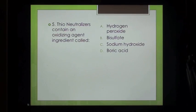Question 5: Thio relaxers contain an oxidizing agent ingredient called: A. Hydrogen Peroxide, B. Bisulfate, C. Sodium Hydroxide, D. Boric Acid.